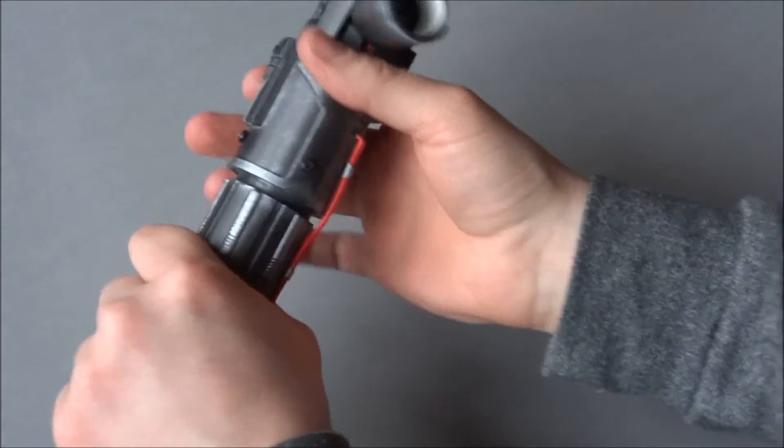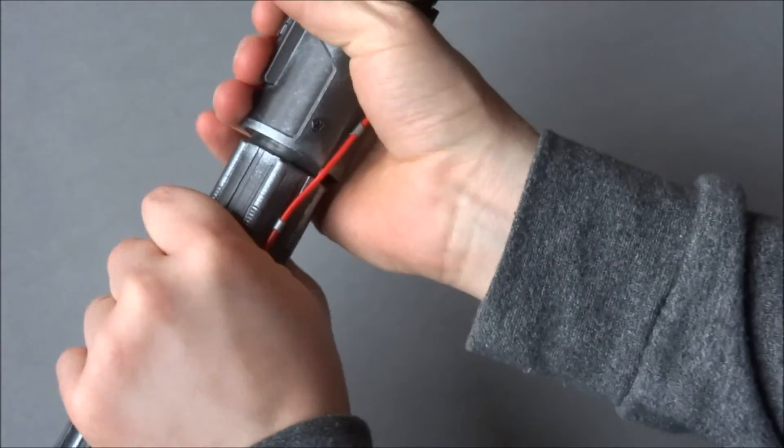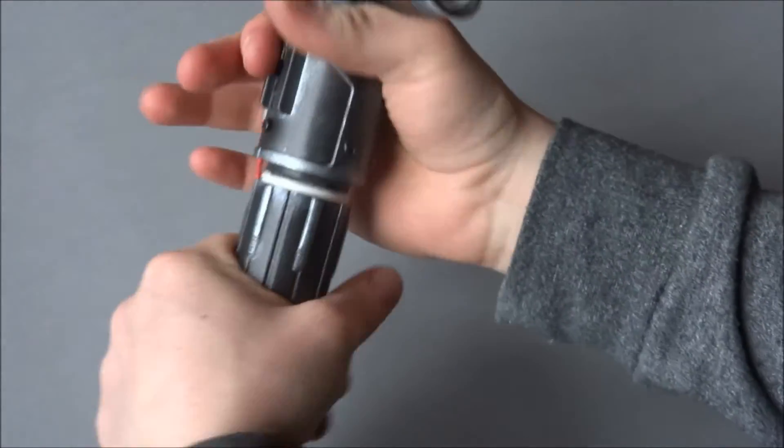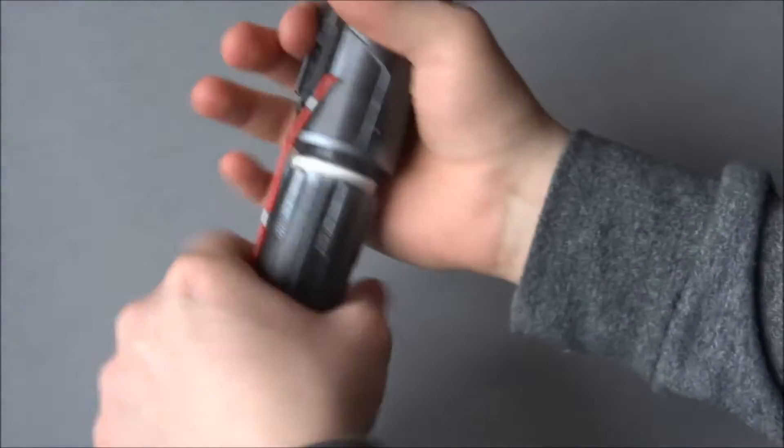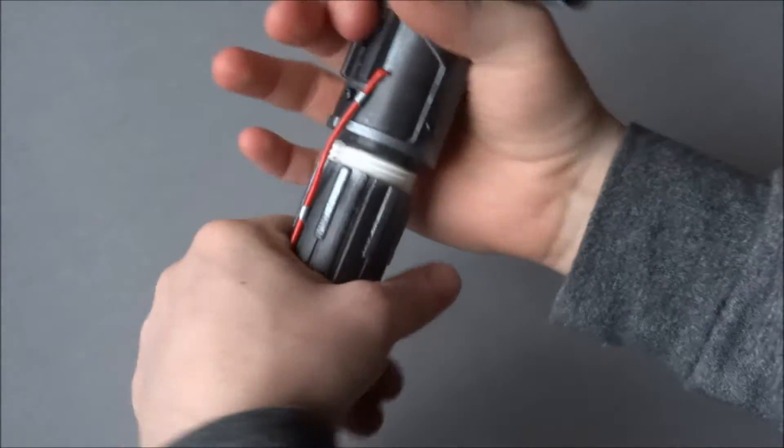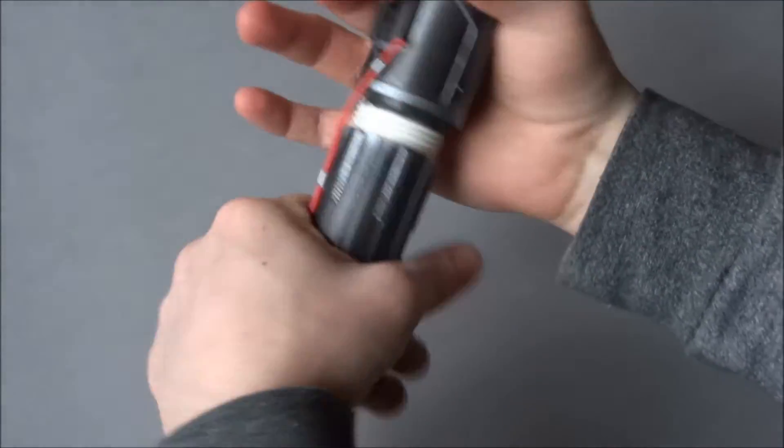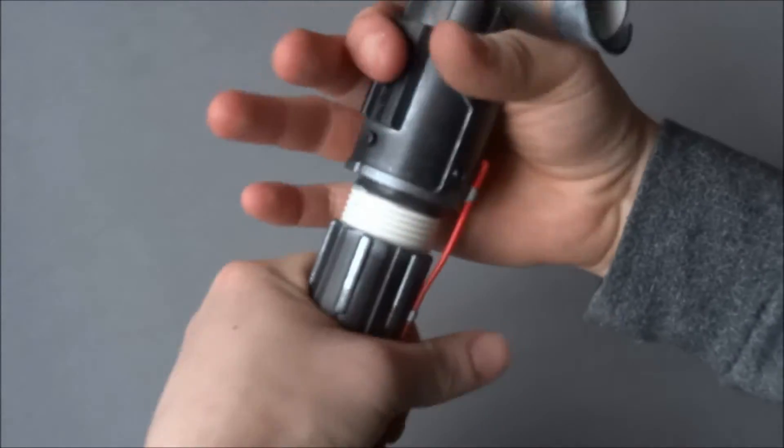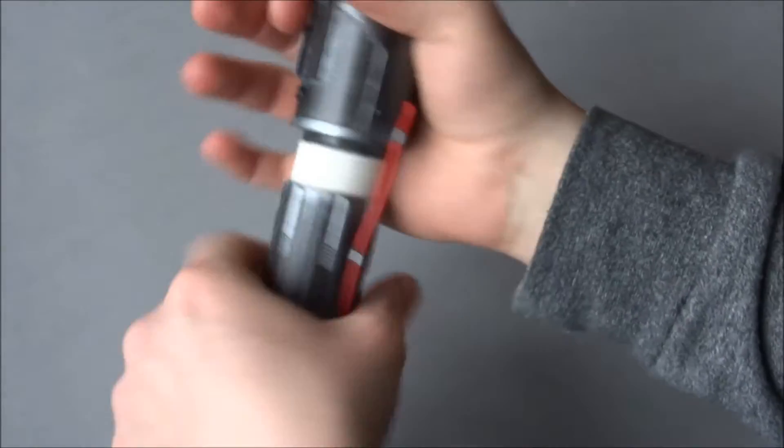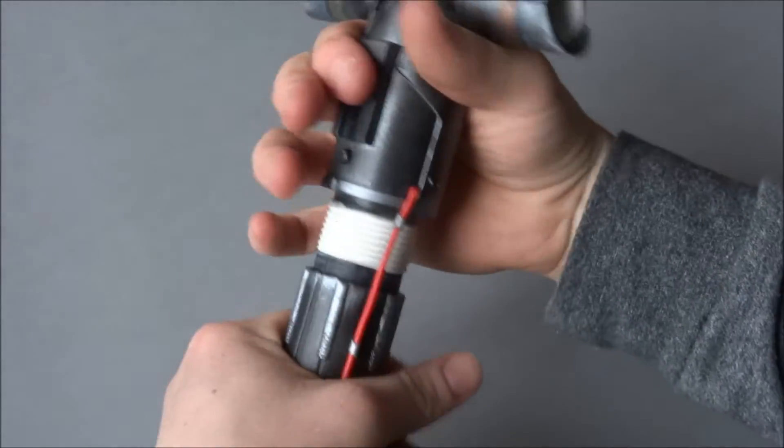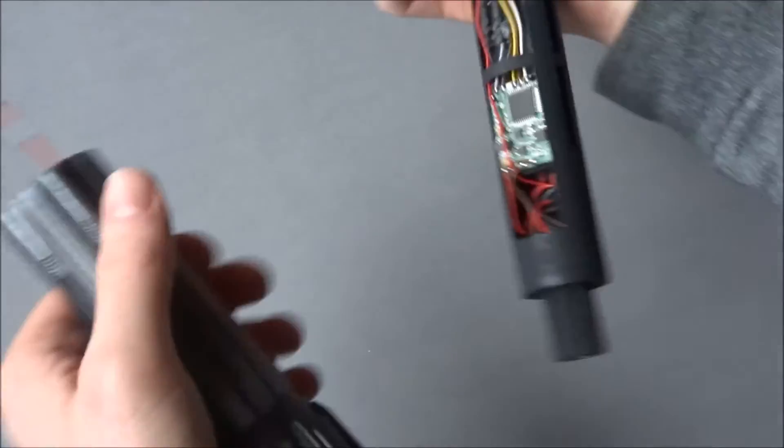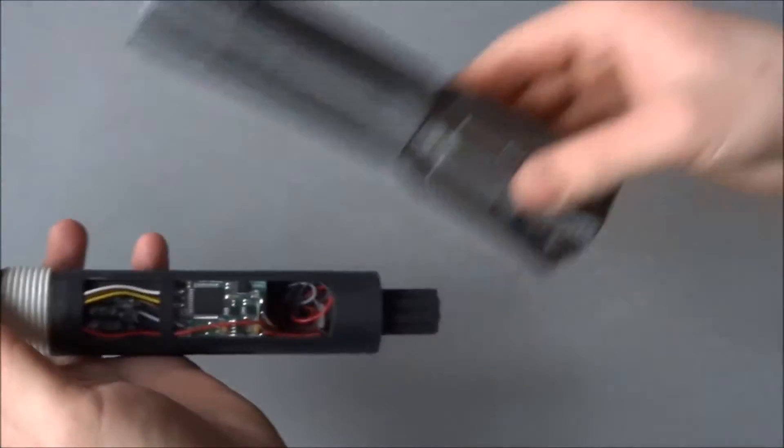You grab that and you just unscrew it. That should be done very easily with the aluminum version later on but for the 3D print it's a bit harder. Be careful not to damage the wire, although it's pretty flexible and pretty tough. Then you slide it off and you see a 3D printed chassis.